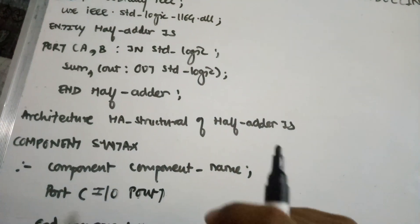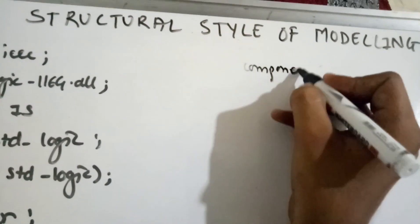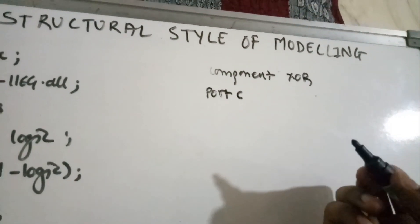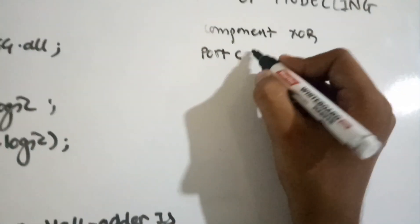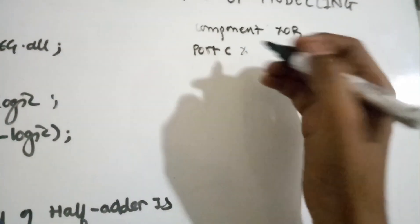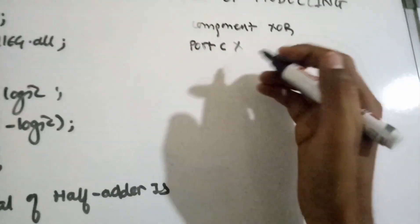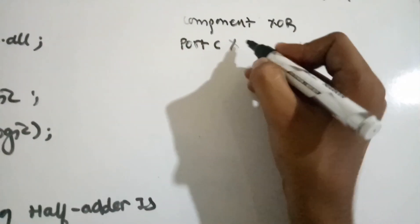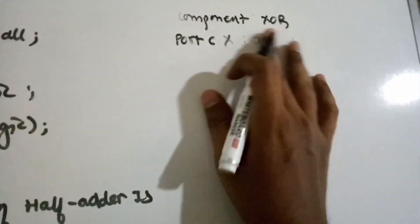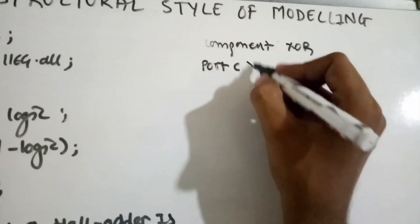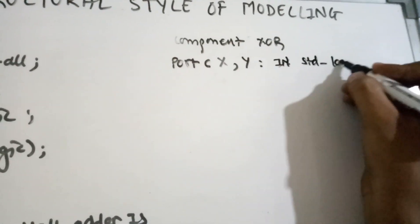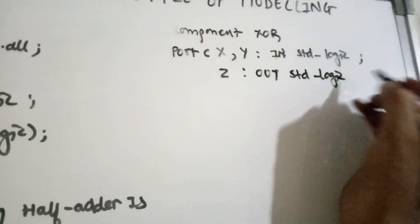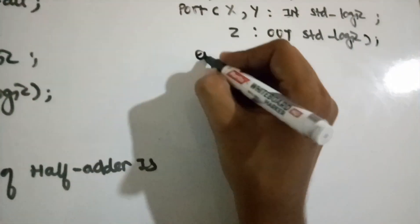The first component declaration is for XOR: component XOR, port (X, Y : in std_logic; Z : out std_logic), end component. XOR has two inputs (X, Y) and one output (Z). You can use any variable names for the signals, which I will explain further.